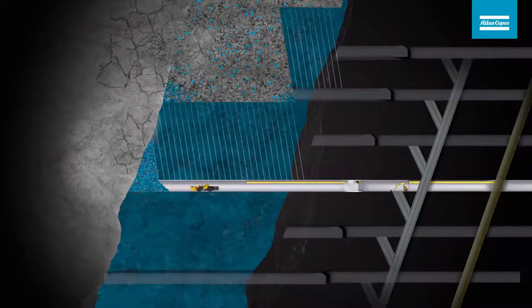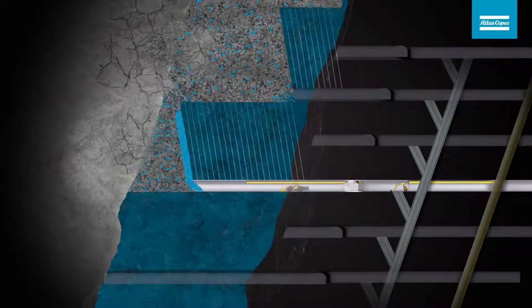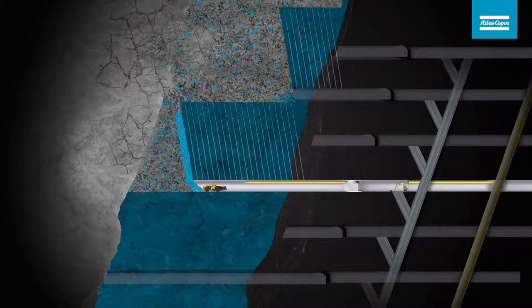Rock is loaded from the cave front after each blasted ring. In order to control dilution of waste rock in the cave, loading a predetermined extraction percentage of rock is done.